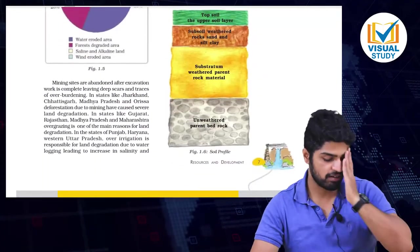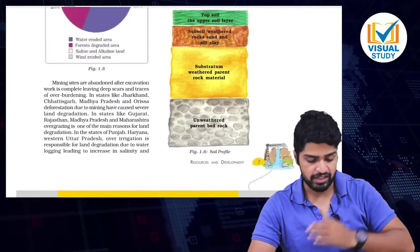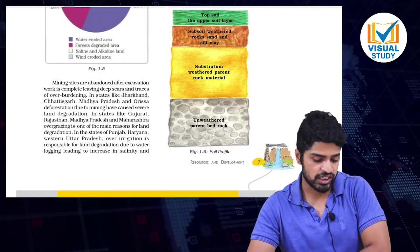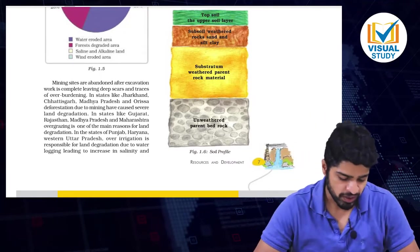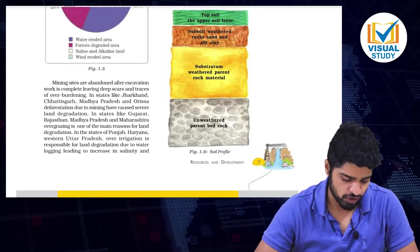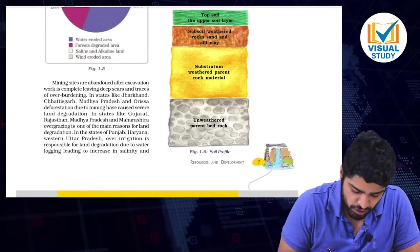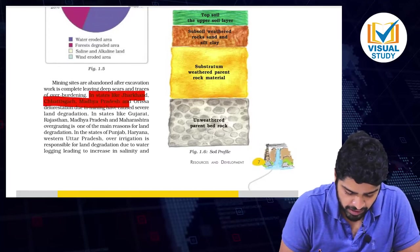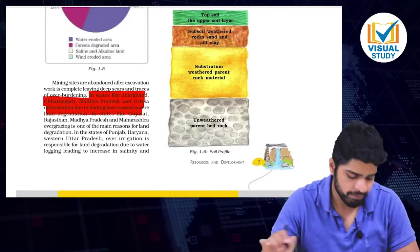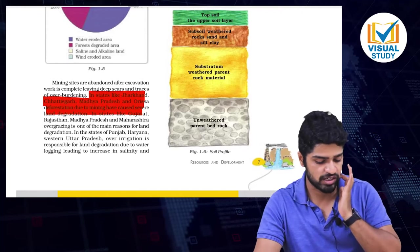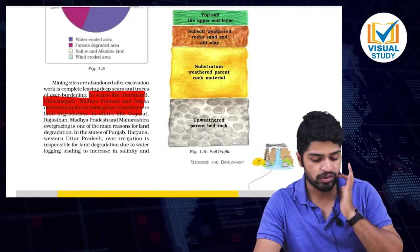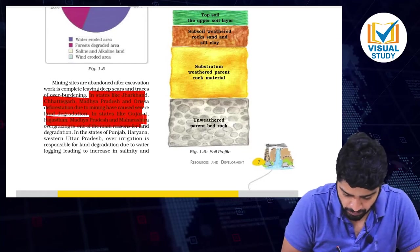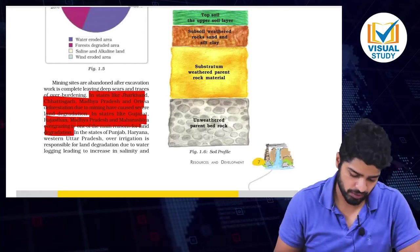Mining sites are abandoned after excavation work is complete, leaving deep scars and traces of overburden. In states like Jharkhand, Chhattisgarh, Madhya Pradesh and Orissa, deforestation due to mining has caused severe land degradation. In states like Gujarat, Rajasthan, Madhya Pradesh and Maharashtra, overgrazing is one of the reasons for land degradation.